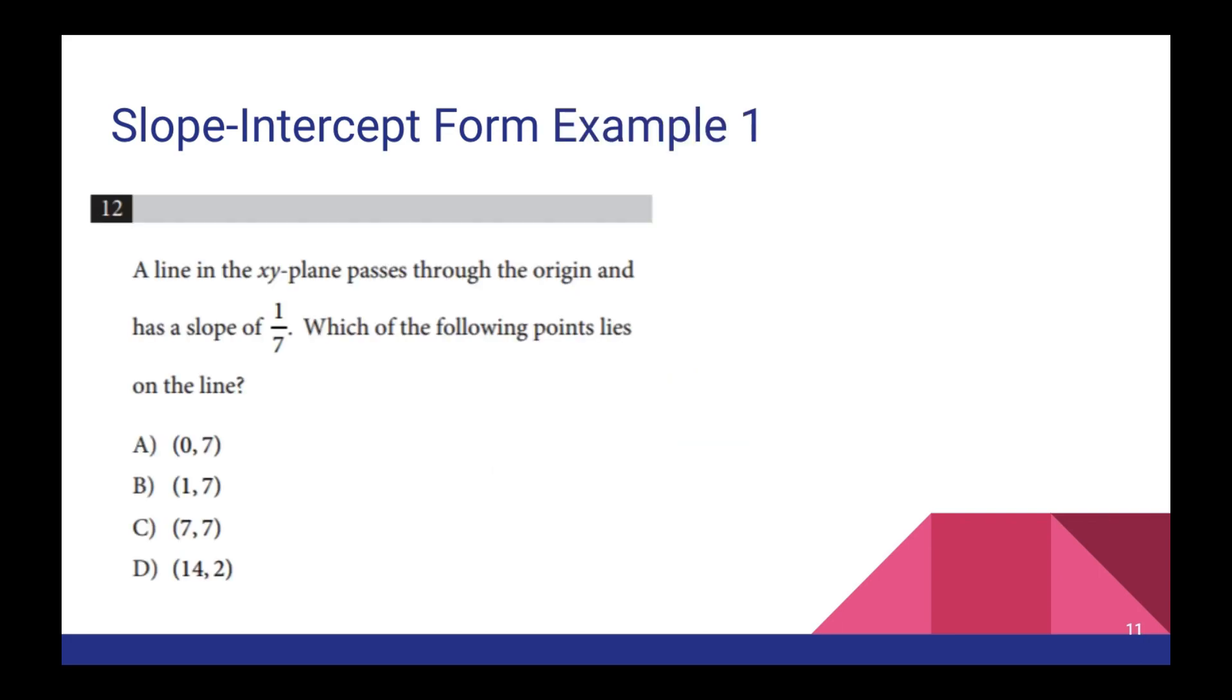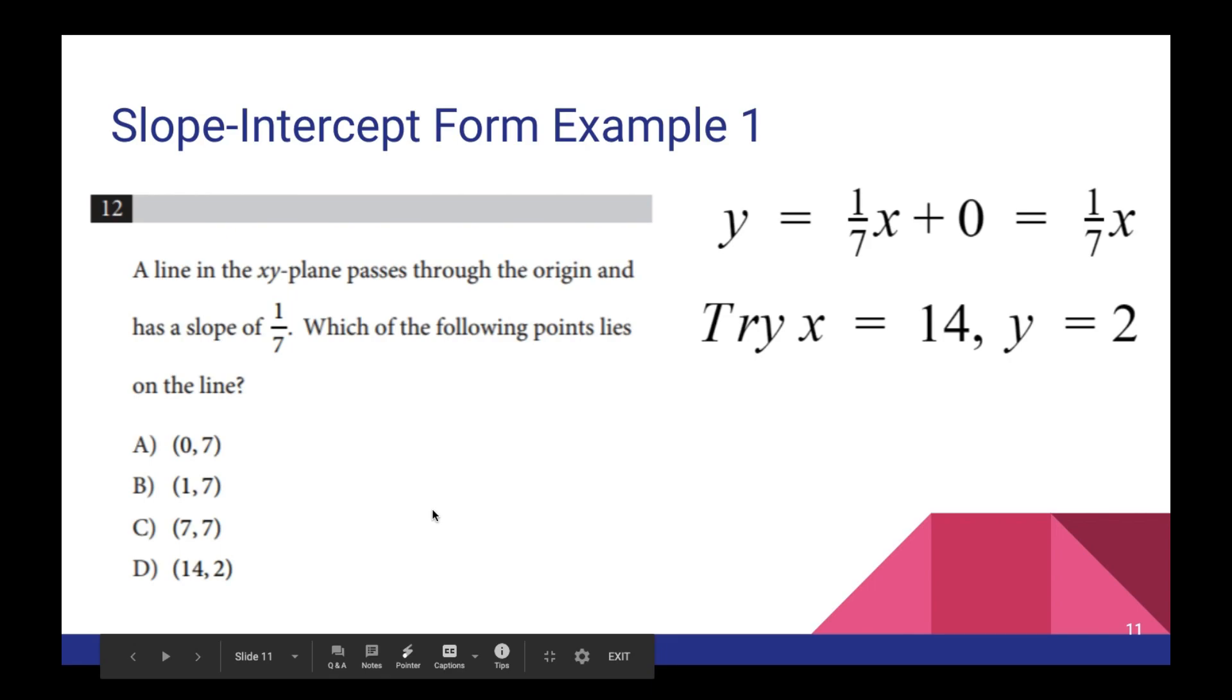So building on that concept, this practice problem immediately gives us a slope of 1 over 7. And it tells us that this line passes through the origin, aka 0, 0. So we know that the y intercept of this, aka B, is going to be 0. And the m or slope is going to be 1 over 7. So we build our equation, which simplifies down to y equals 1 over 7x. And then we just, for this one at least, we just plug in our answers until we get one that makes sense. In this case, 14 over 2 does equal 7. So that's our answer.